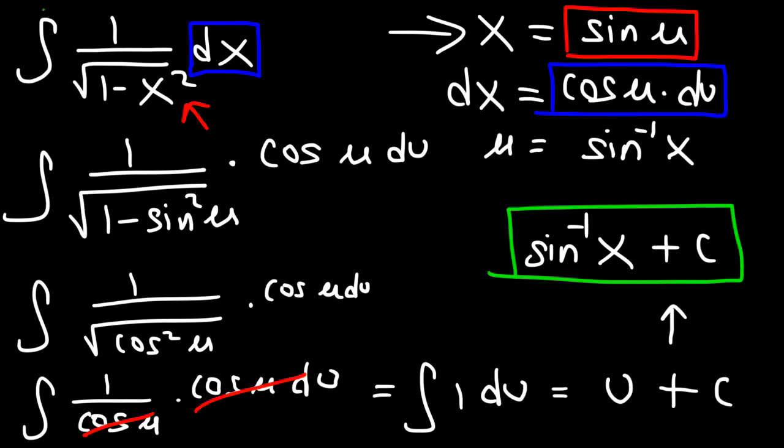So the integral of 1 over the square root of 1 minus x squared dx is arc sine of x plus c.